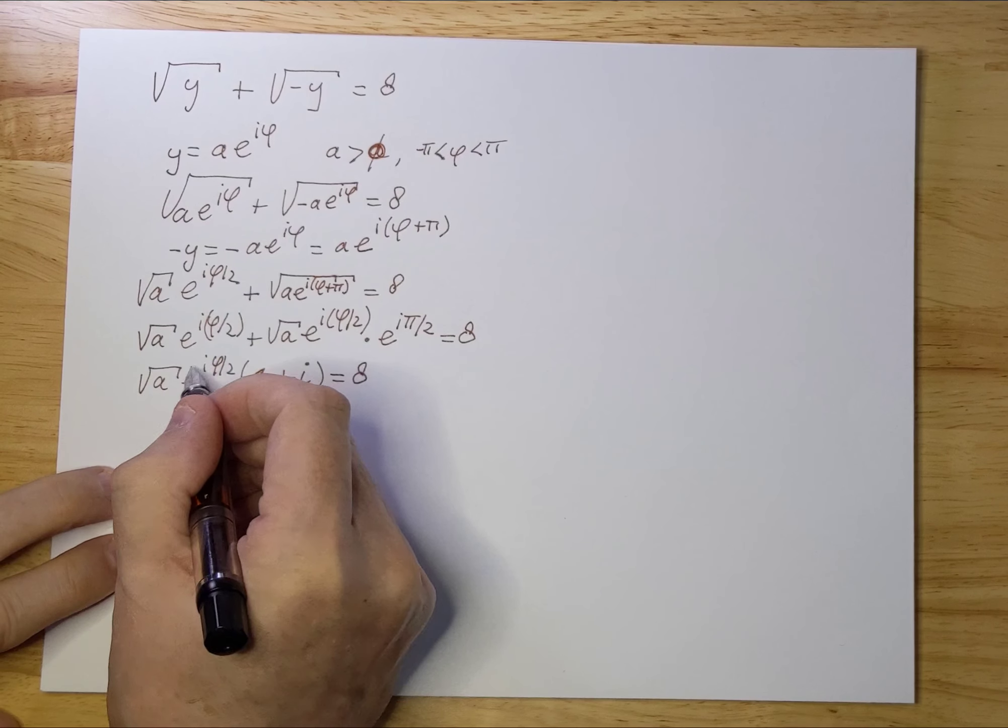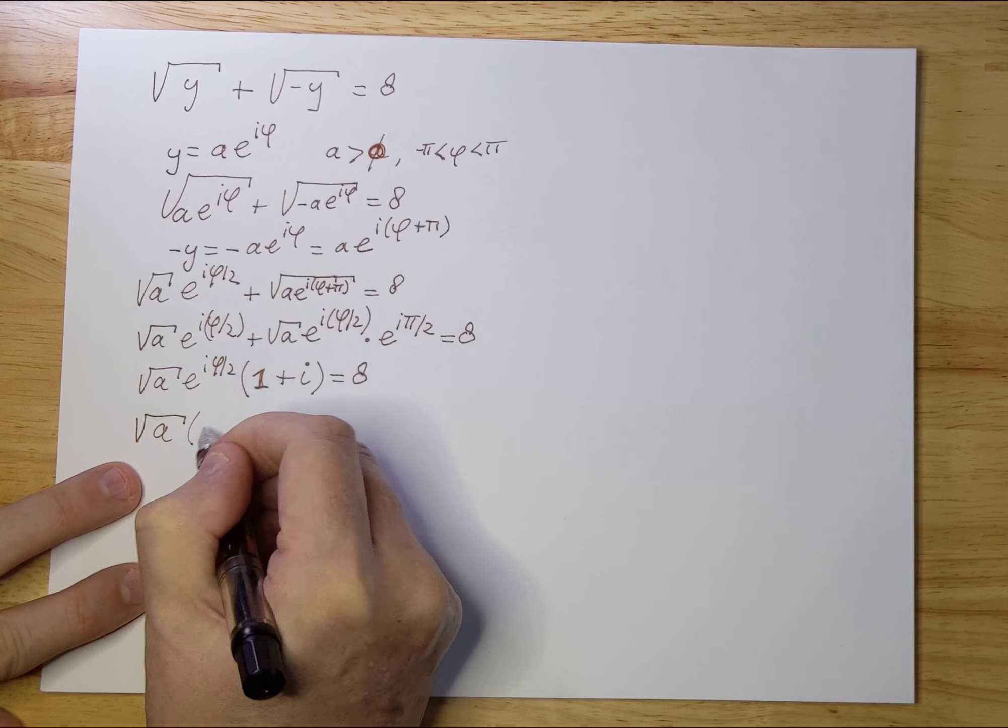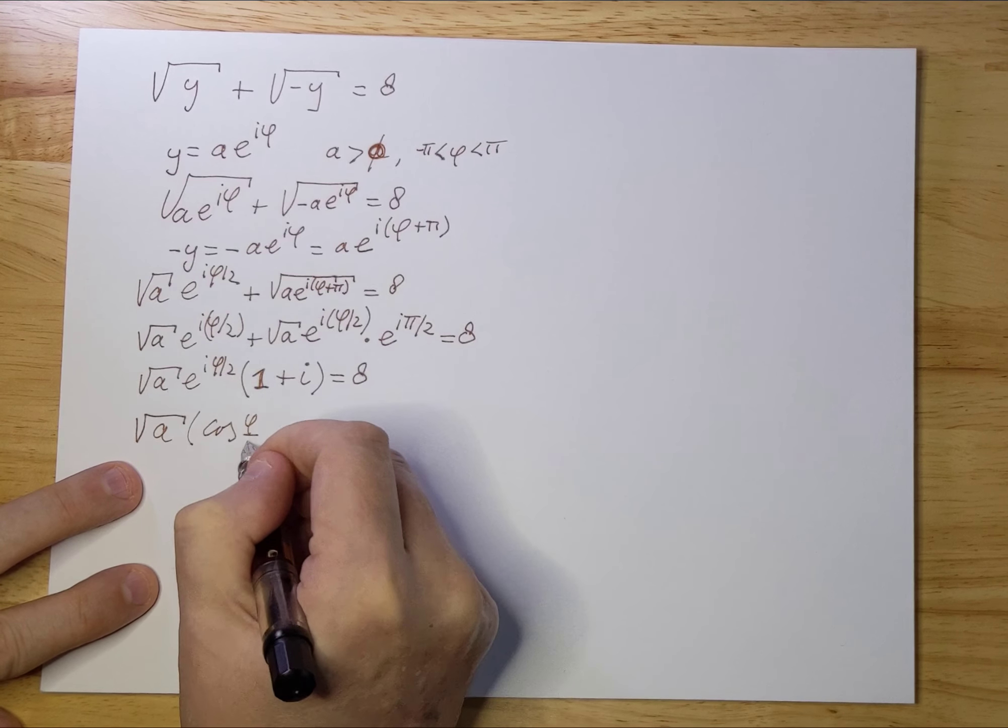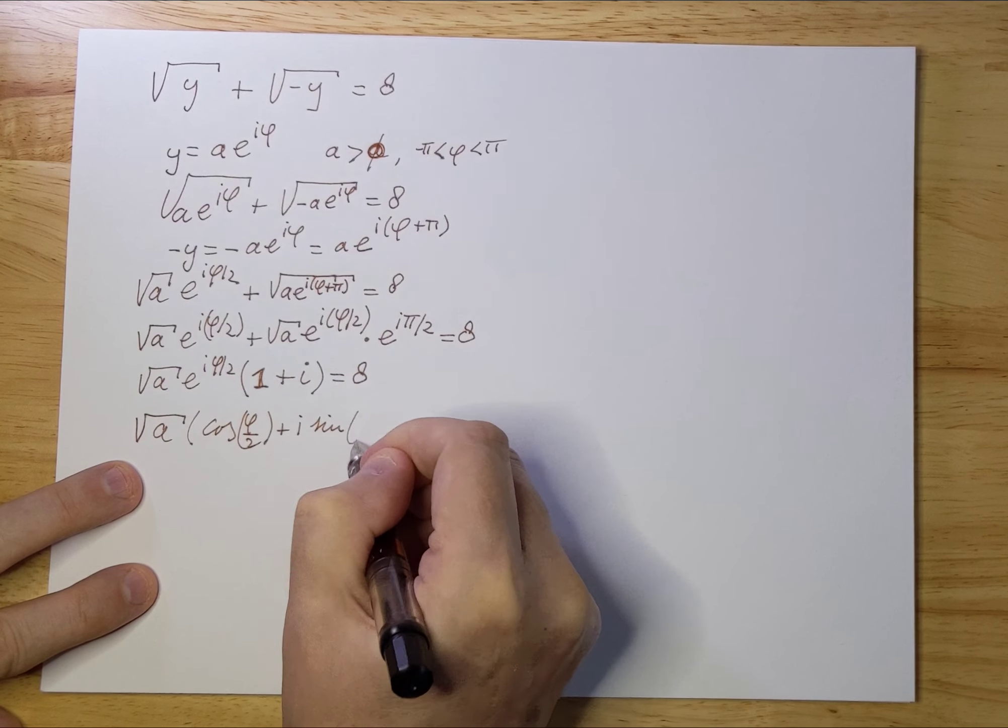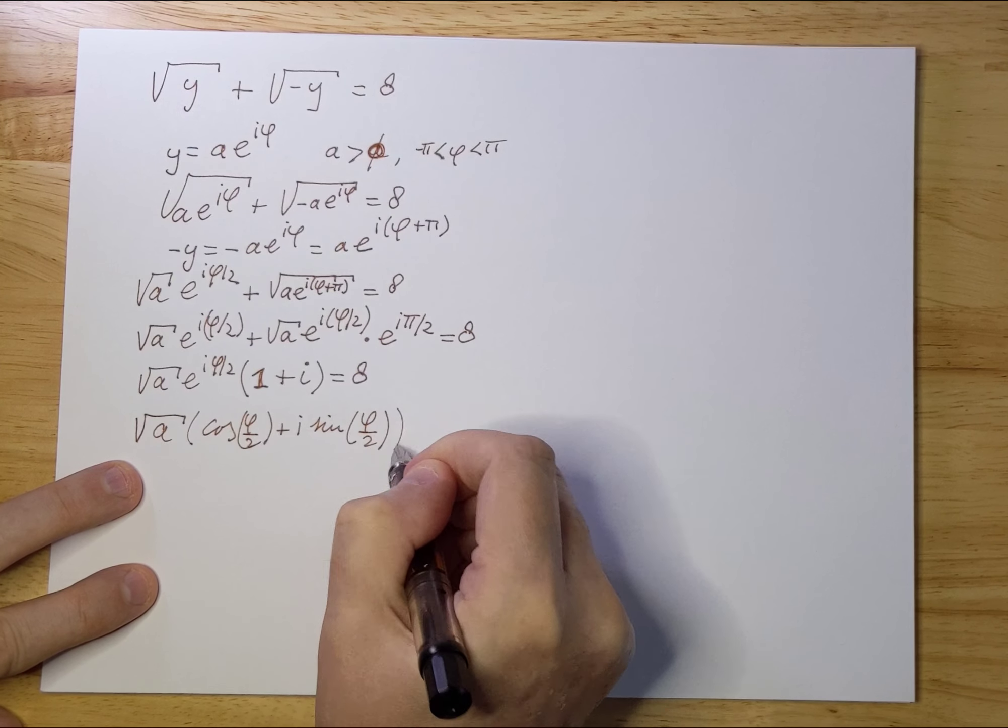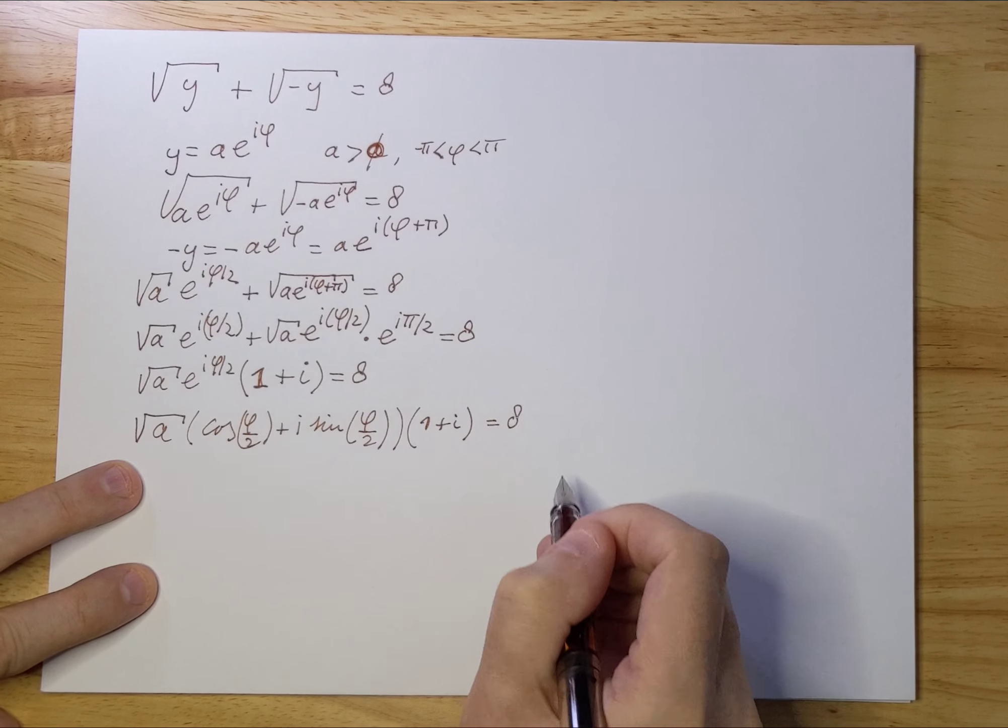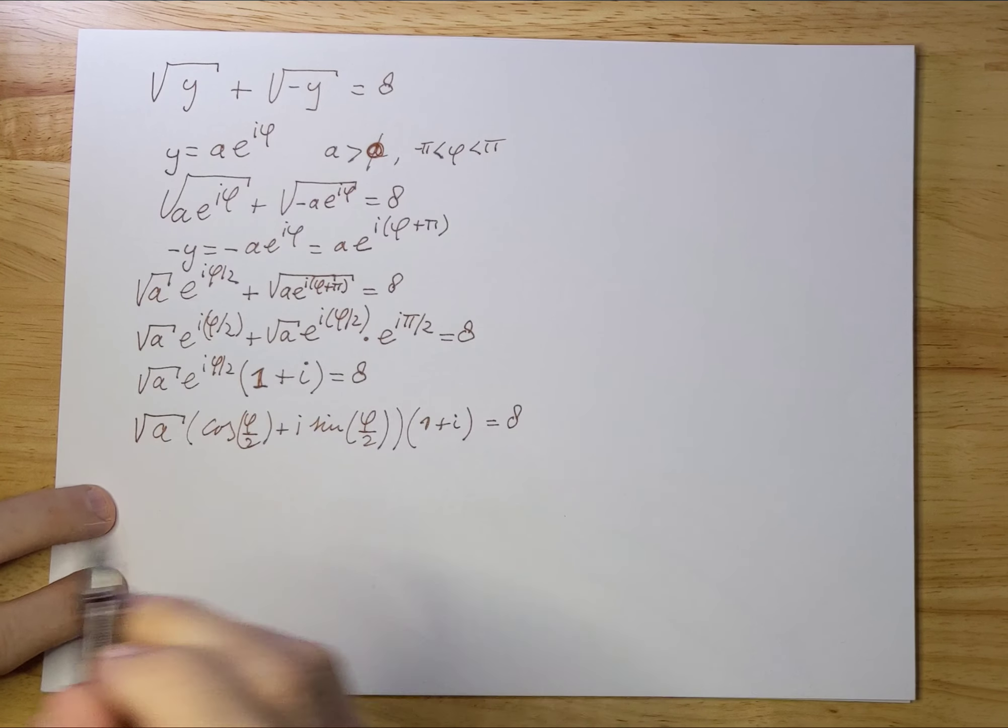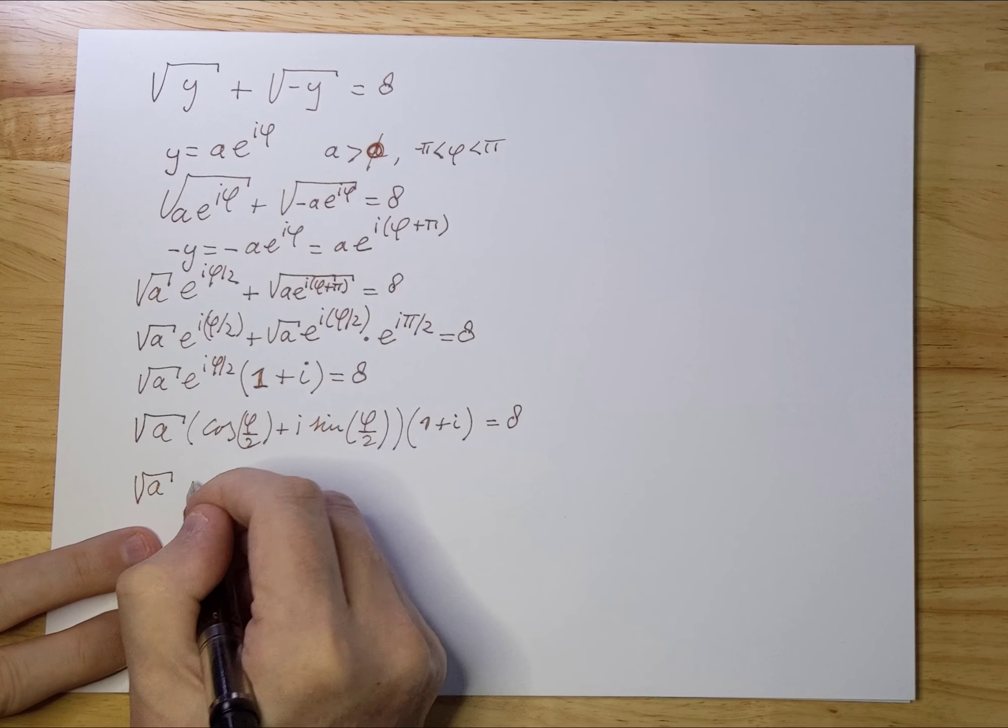Now we can work this term out. We can say this is really √a times (cos(φ/2) + i·sin(φ/2)) times (1 + i), and that equals 8.